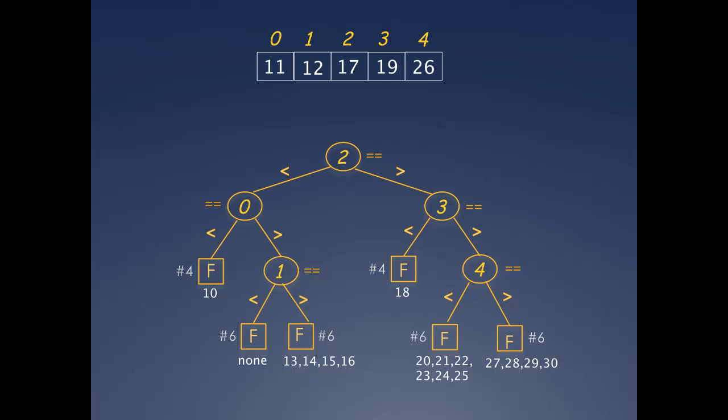Then at the last level, where all failure nodes incur 6 comparisons, going left to right, we have no values at all at the leftmost node, then 4, 6, and 4 values respectively at the other nodes.